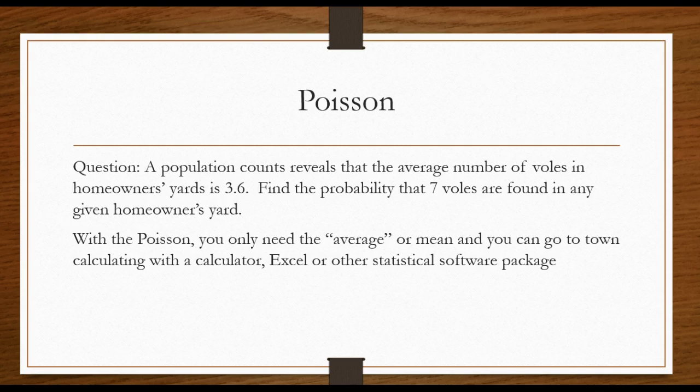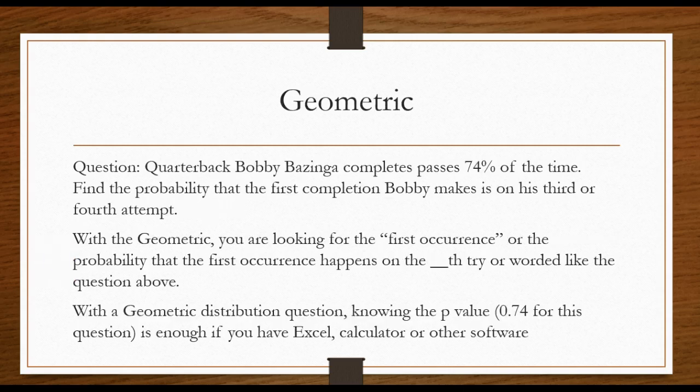I have them in my front yard. I like to talk about voles a lot. Find the probability that seven voles are found in any given homeowner's yard. With the Poisson you only need the average or the mean and you can go to town using a calculator, Excel, or some other statistical package.